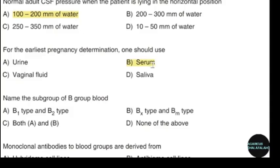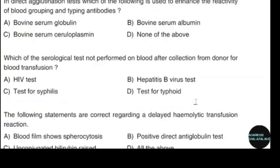Name the subgroup of B blood group. Correct answer: option B — BX type and BM type. In direct agglutination test, which of the following is used to enhance the reactivity of blood grouping and typing antibodies? Correct answer: option B — Bovine serum albumin.